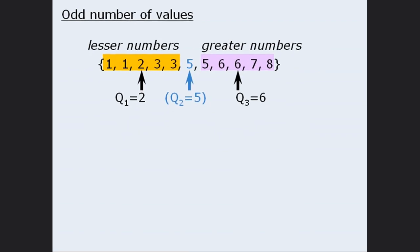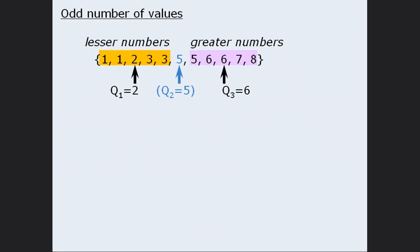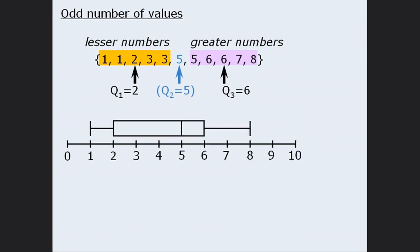From here, we can construct our box plot as follows: here's the smallest value in the set, here's the first quartile, here's the second quartile also known as the median, here's the third quartile, and here's the biggest number in our set.